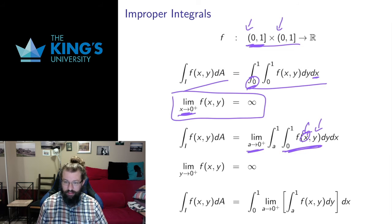So I can still do this inside piece. And then when I get to this outside piece, I do the same trick I did for improper integrals of a single variable, is I take a limit approaching the problematic place where the function diverges and see what happens to the integral. Is the integral going to diverge or is the integral going to converge in that limit.